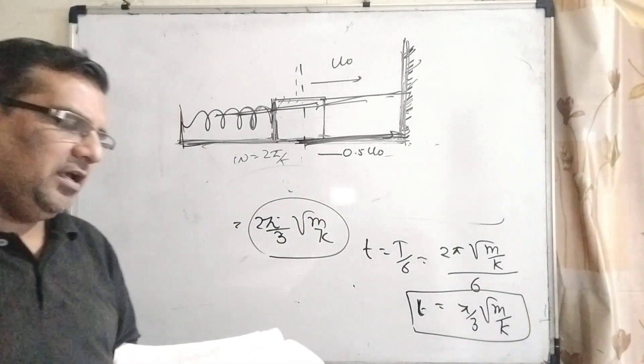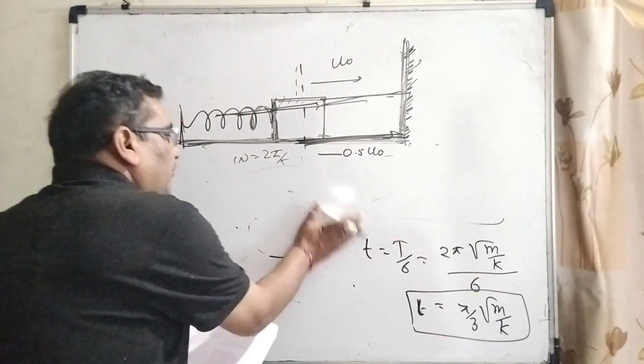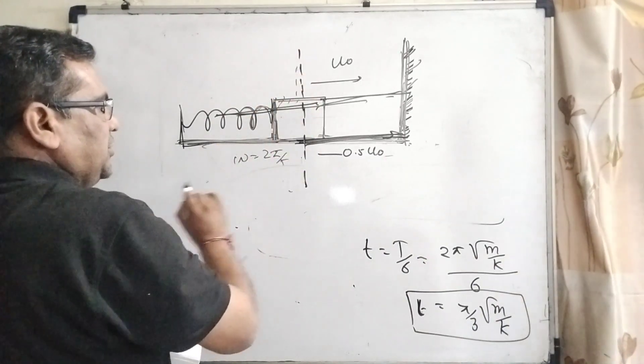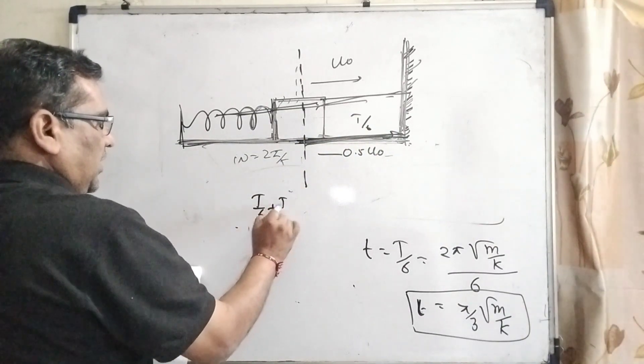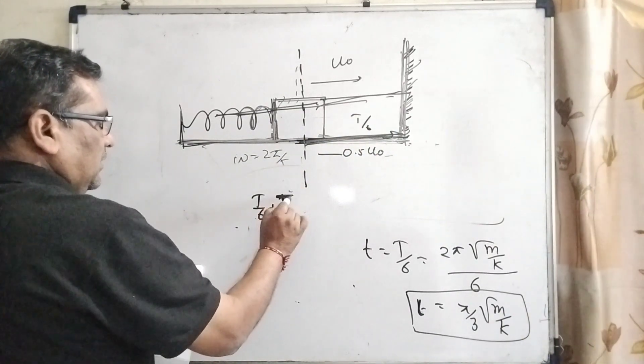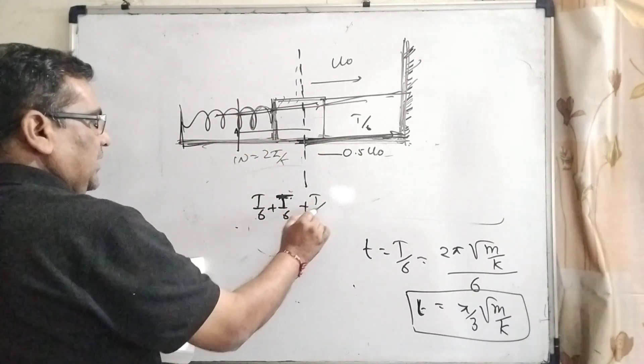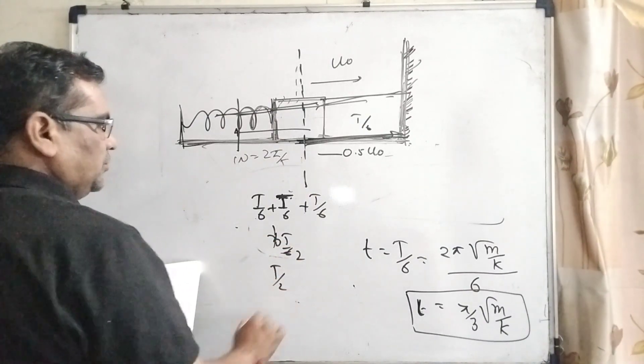The third option is given: the time at which the maximum compression occurs. Here we have to find out the maximum compression. Let's consider this is the mean position at t by 6, then comes back t by 6, then again goes to the compression for t by 6, means 3t by 6, which is t by 2.